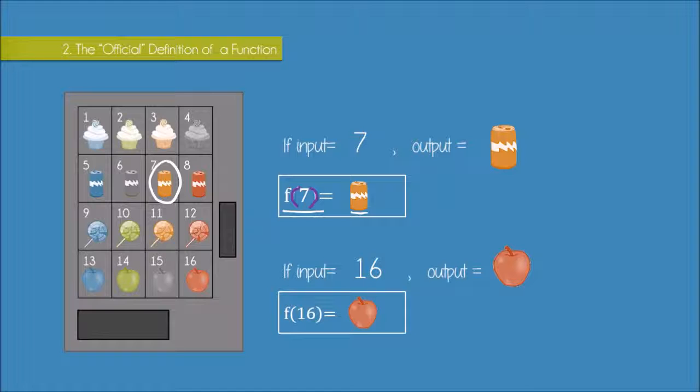I have a second example that says if my input is 16, then my output is the red apple. And I write that as f of 16 equals red apple. So just remember that we always have the input inside the brackets of the function notation.